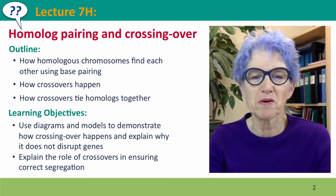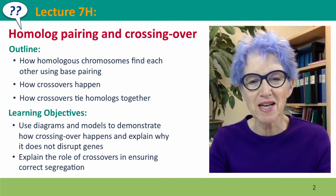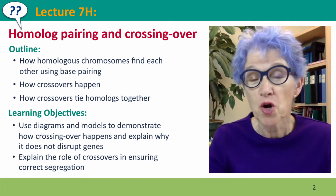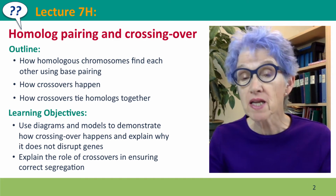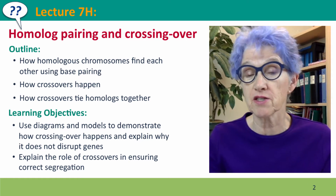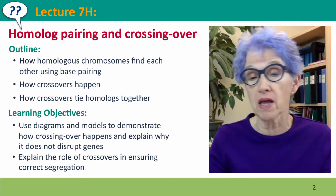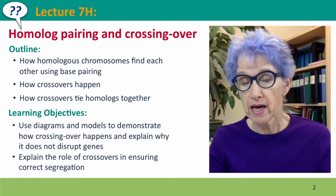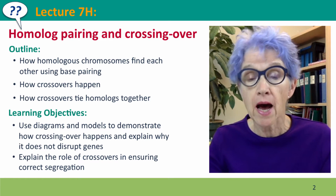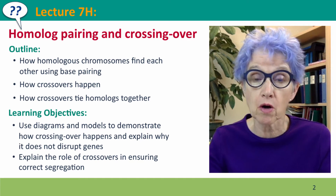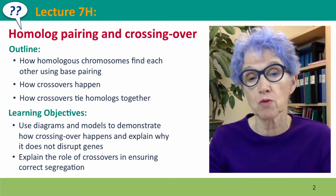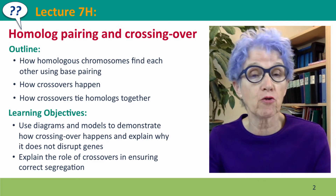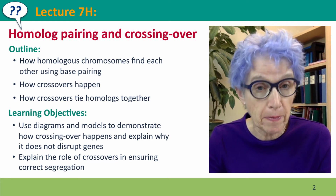Hi, everyone. Welcome back to Useful Genetics. This is Lecture 7H, where we're finally going to get to the secret molecular side of meiosis and understand how the homologous chromosomes find each other and how crossing over happens.